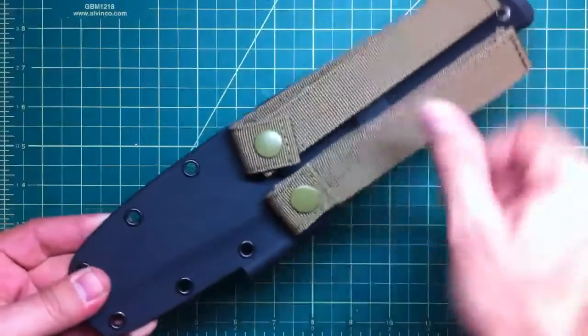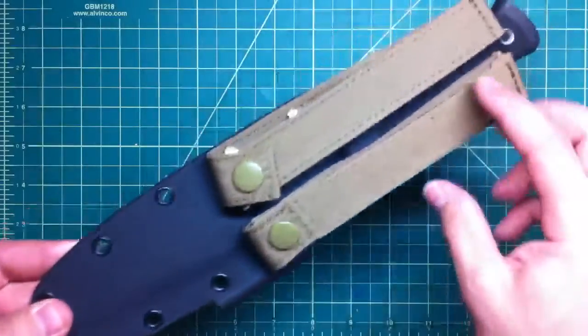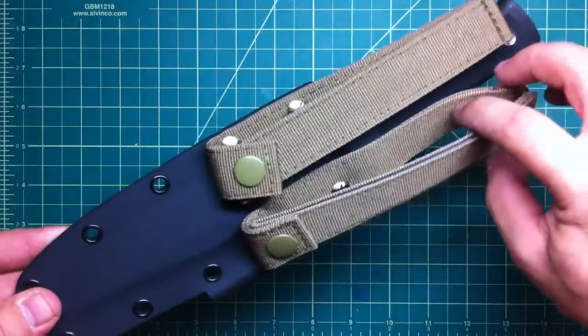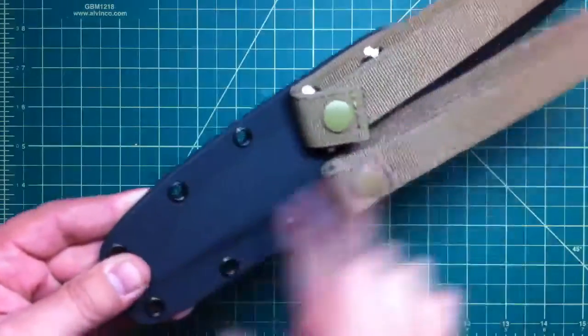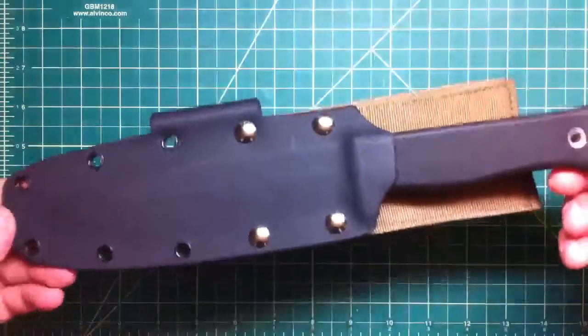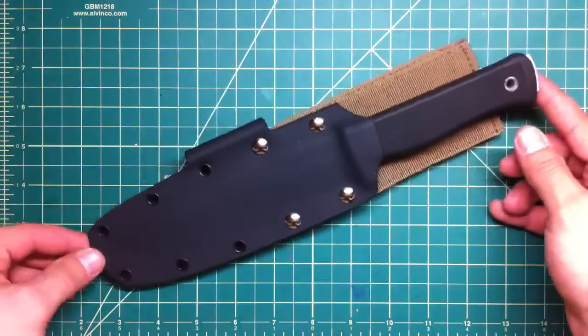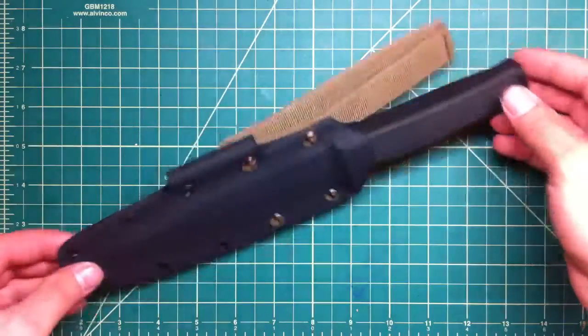You would just turn this around the other way, maybe put one more hole here, somewhere up here, so it gets the attachment on the bottom too, like on the whole length. And boom, there you go. Completely compatible MOLLE kydex sheet.